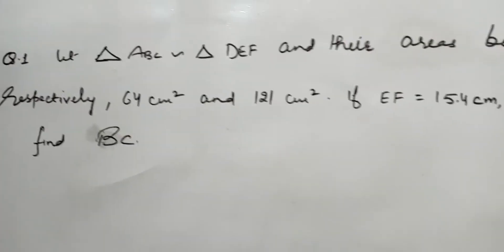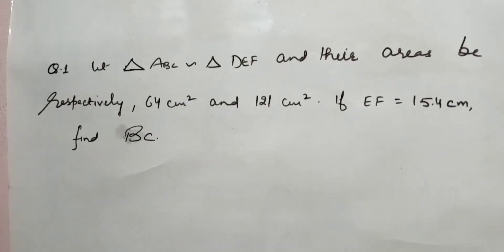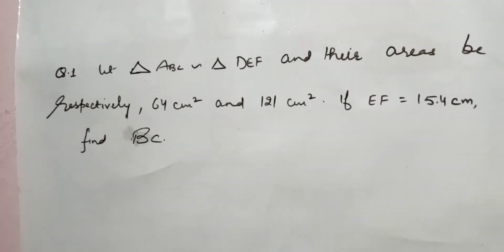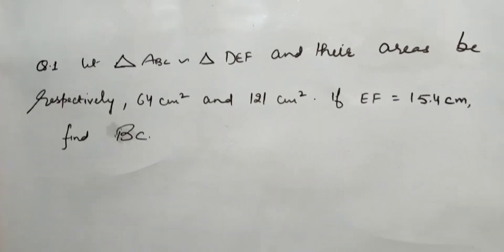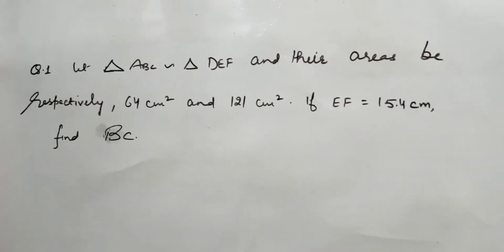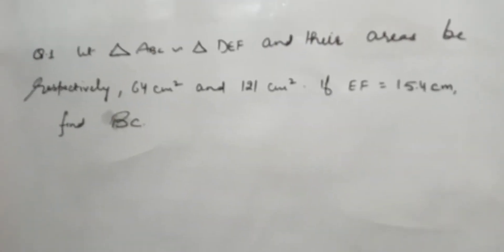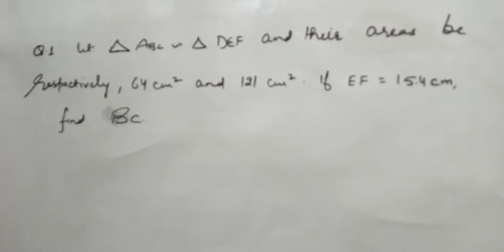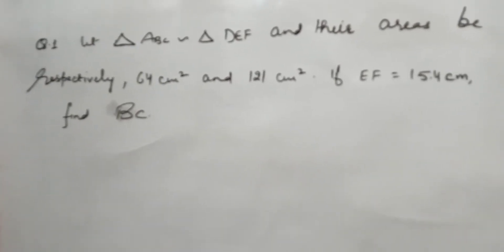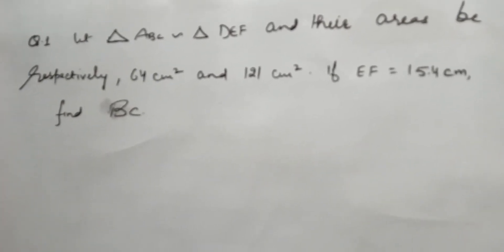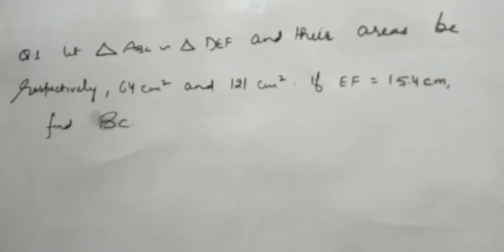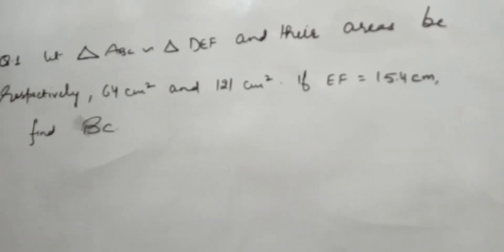Good morning students, today we are starting exercise 6.4. The first question is: Let triangle ABC and DEF have areas respectively 64 cm² and 121 cm². If EF equals 15.4 cm, find BC. It's a very easy question based upon the theorems, so we just start from the solution part.